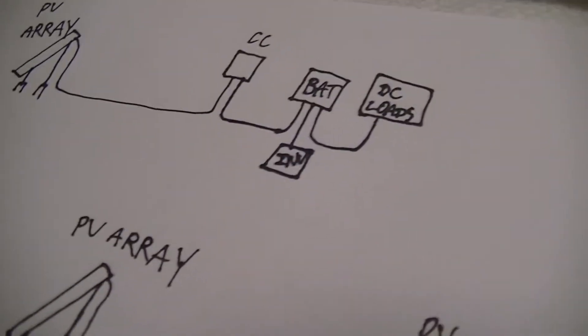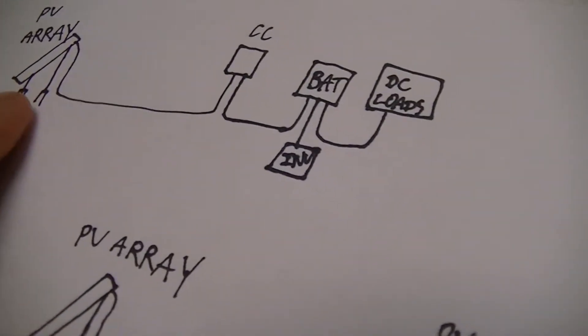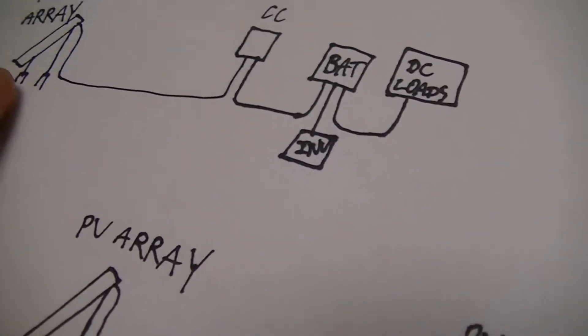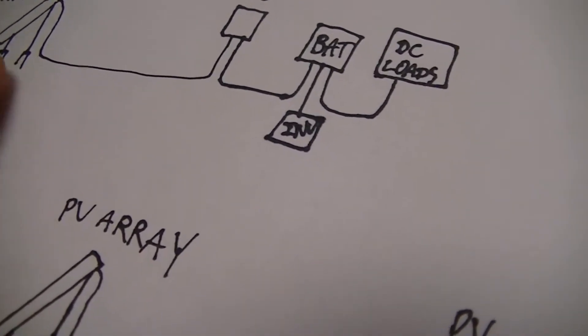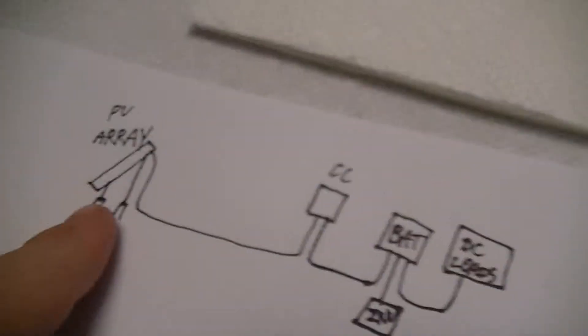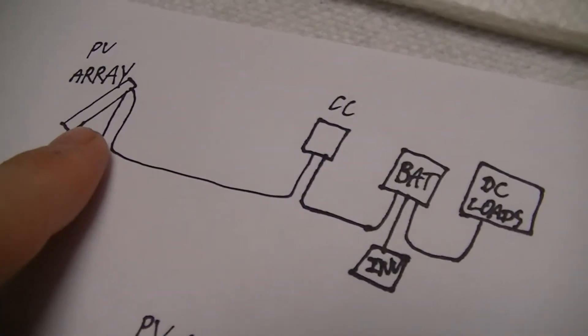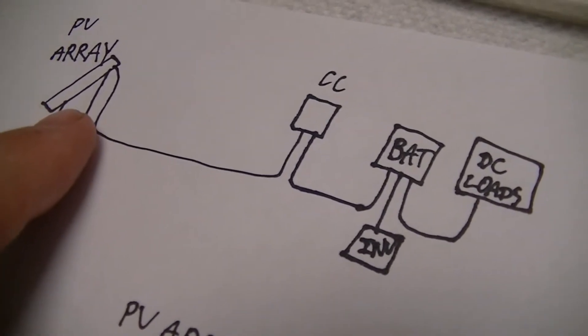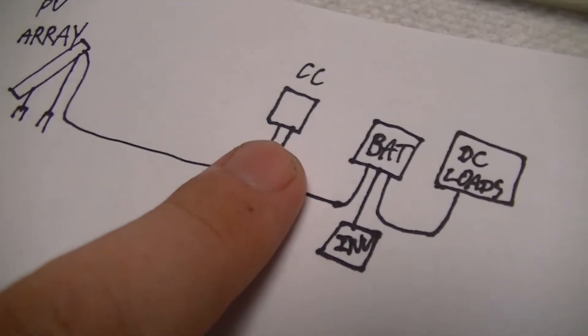Conversely, in the case of something like a portable system where something like man portability or roof space dictates that you need to get as much electricity out of a given size photovoltaic array as is possible, so adding more modules simply isn't an option, maximum power point would make the most sense.